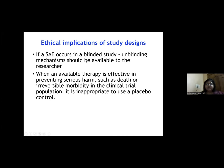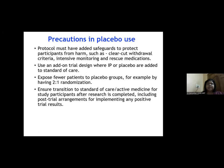Recombinant DNA vaccine products must follow applicable government guidelines and regulations. In blinded studies, unblinding mechanisms for managing adverse events must be available to the researcher and outlined in the protocol. It is inappropriate to use a placebo when an effective therapy exists that can prevent serious harm such as death or irreversible morbidity. If placebo is used, additional safeguards such as clear withdrawal criteria, intensive monitoring, and rescue medications must be in place.